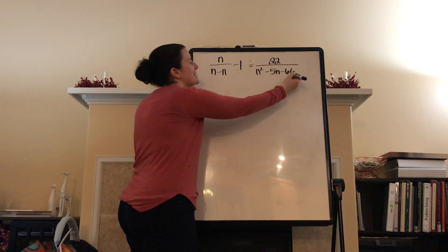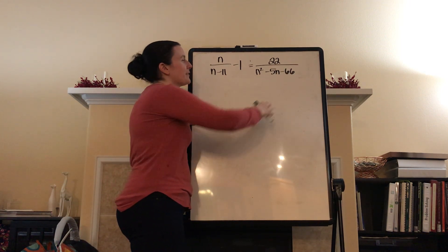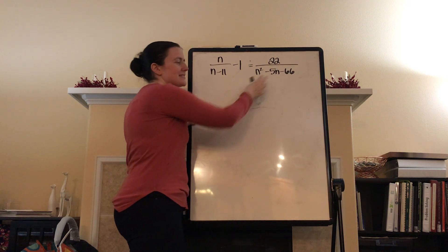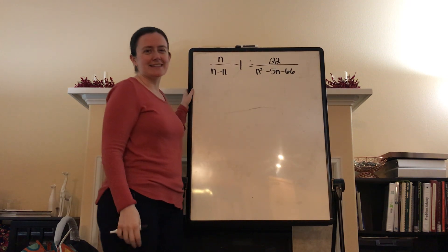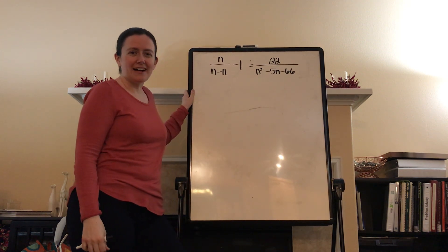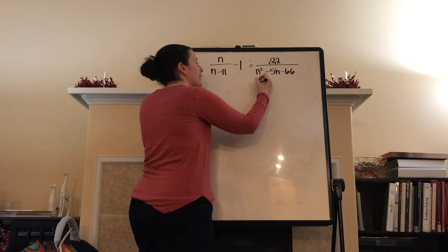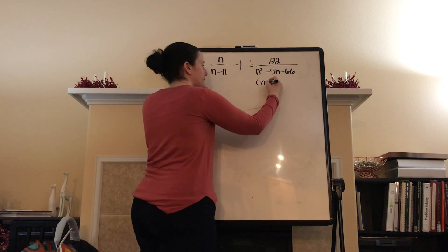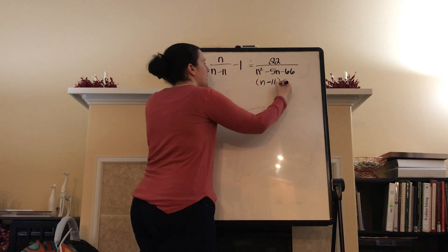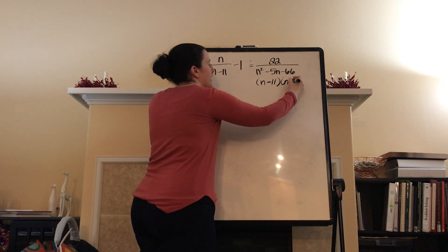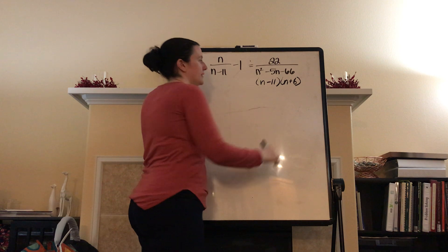So this expression right here — what multiplies to give me negative 66 and adds to give me negative 5? Multiplies to negative 66, adds to negative 5. That would be (n minus 11) and (n plus 6).